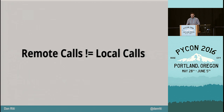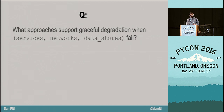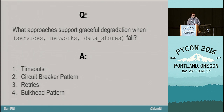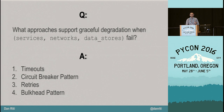Being armed with this knowledge, we know we can't treat a remote call like a local call. There's just too much that can go wrong when we have to go out to the network, so I think we need to give some extra consideration to these remote calls. This is the question I want to explore: what approaches support graceful degradation when the dependencies in my system — my services, my networks, my data stores — fail? This is my personal hit list. Please note it's not exhaustive, but simply a list of approaches I like to think of as good starting points.